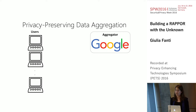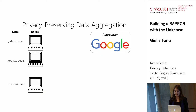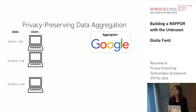You have a collection of users and an aggregator — in this case, Google. These users have some data that's of interest to the aggregator. For example, that data might be the default browser homepage for each user. The aggregator is interested in learning some population-level statistics, like the distribution of this data, without learning individual users' data elements.